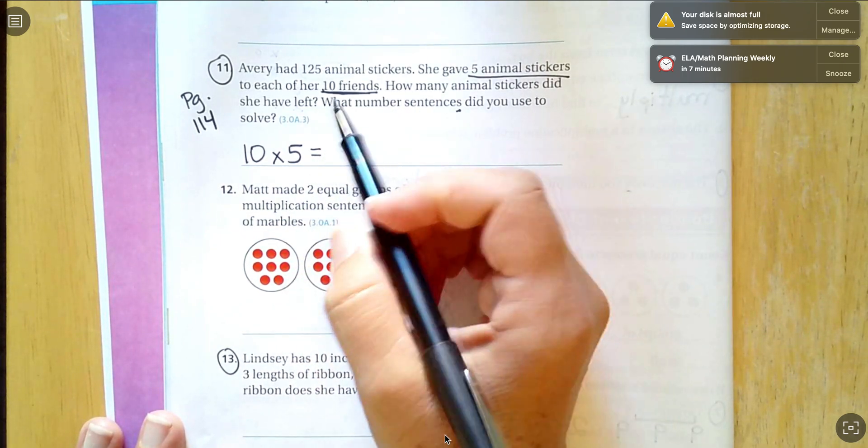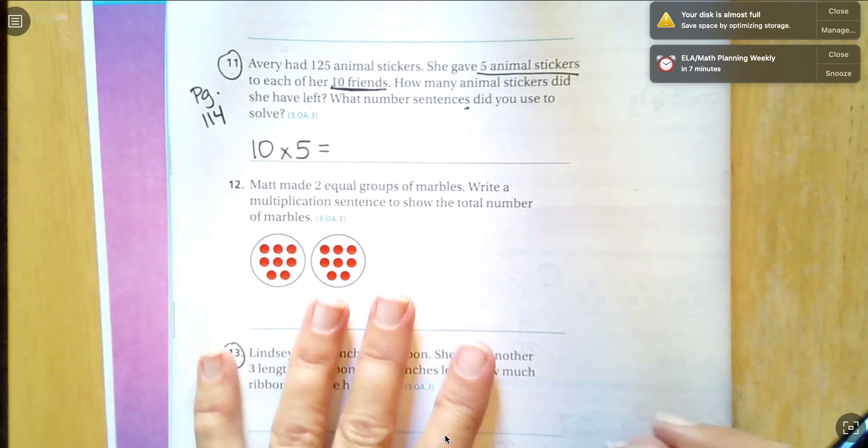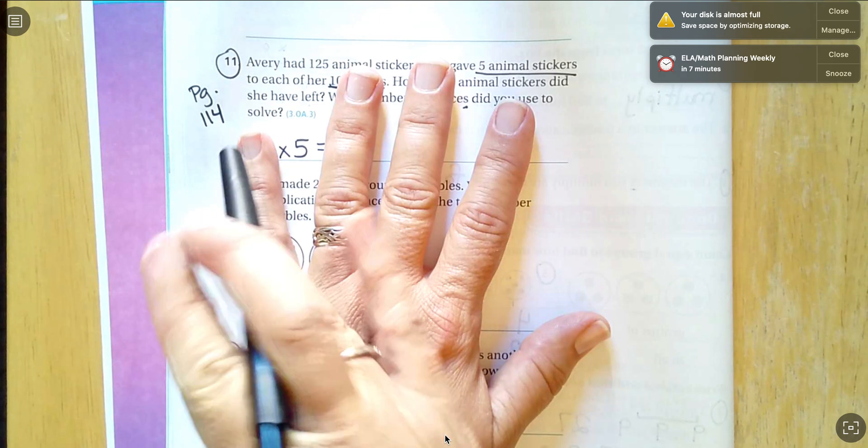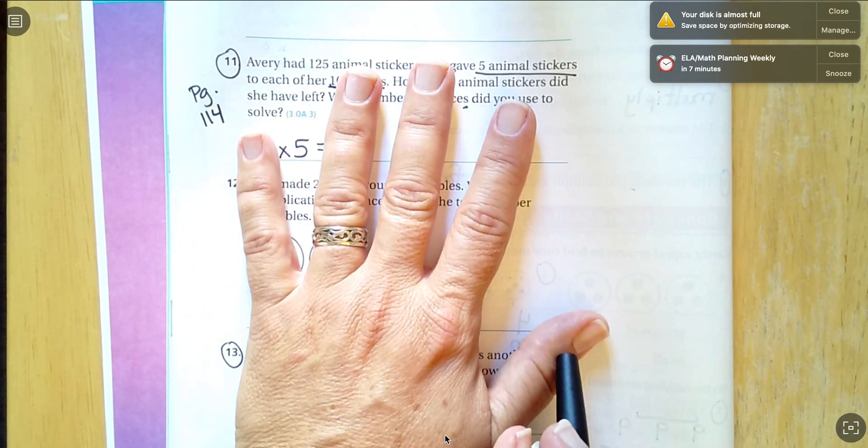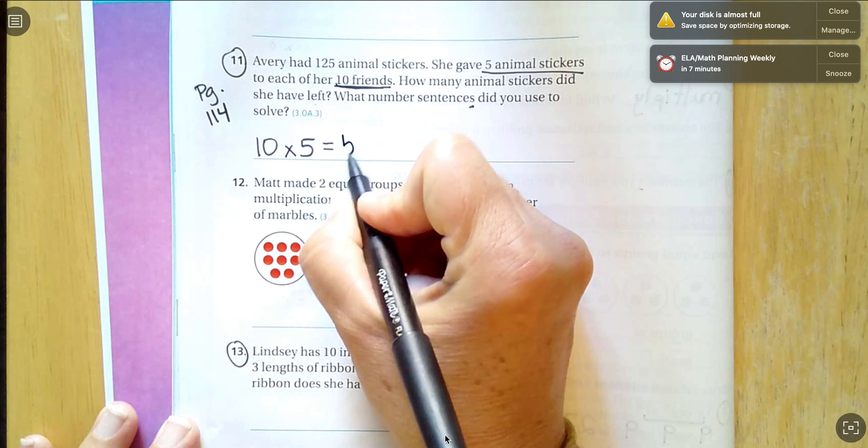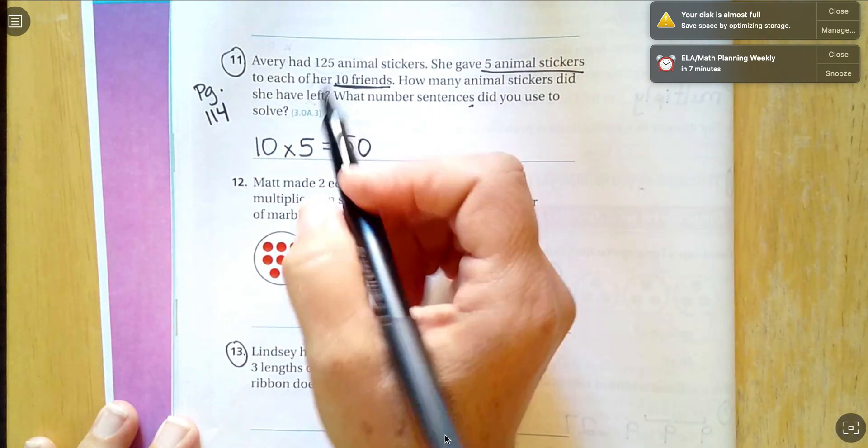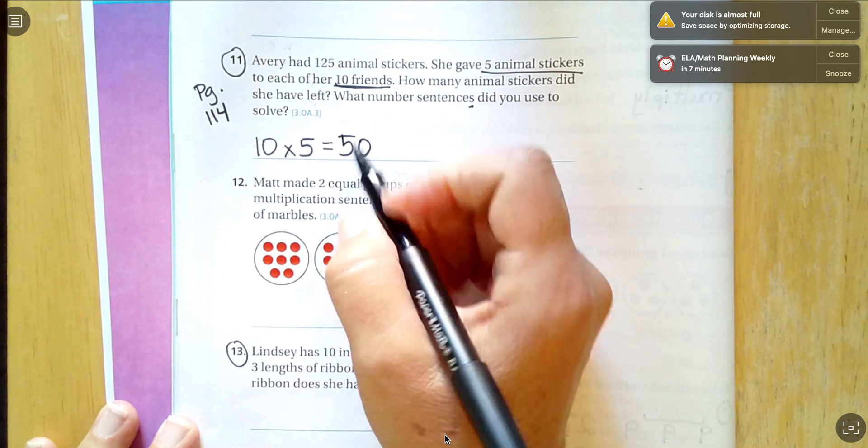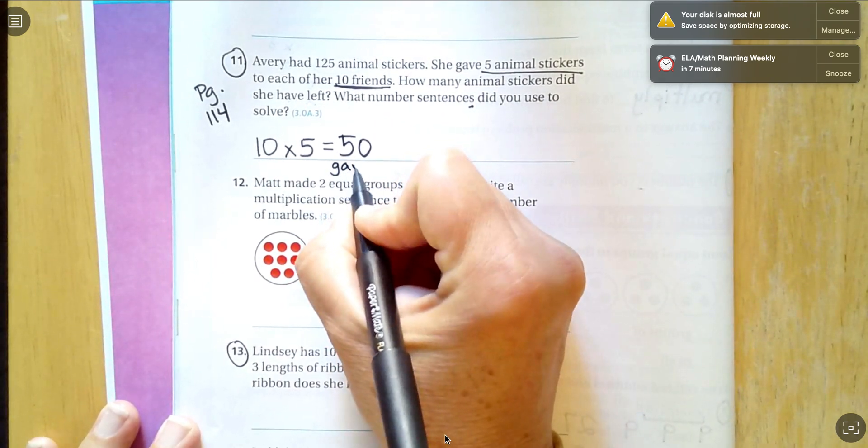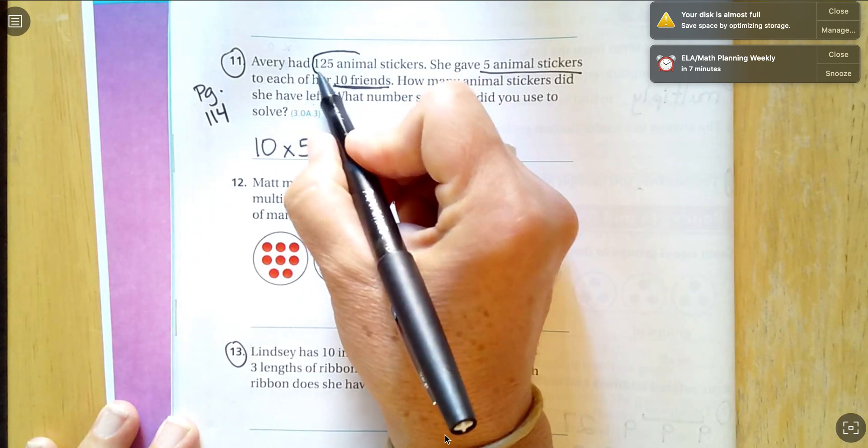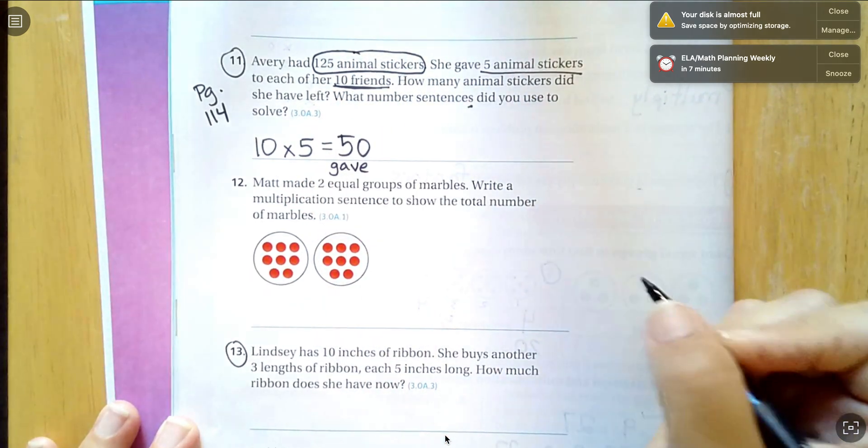So 10 groups of five. Each of the 10 friends got five. So 10 times five. I'm counting by 10s, five times. 10, 20, 30, 40, 50. 10 times five is 50. So how many stickers did she have left? I know that she gave away 50. She started with 125. So that's my whole.